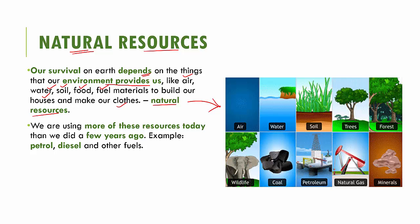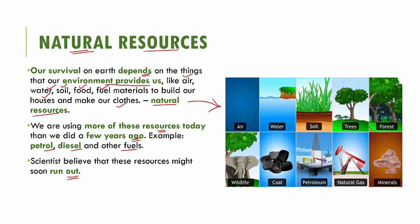We are using more of these resources today than we did a few years ago. For example, we use petrol, diesel and other fossil fuels that we are getting from our environment. Scientists believe that these resources are limited and soon they are all going to run out — we won't have any more petrol, diesel or any of these fossil fuels left. And due to pollution of air, water and soil, the quality of these natural resources is also deteriorating and coming down, not as good as it was many years ago.